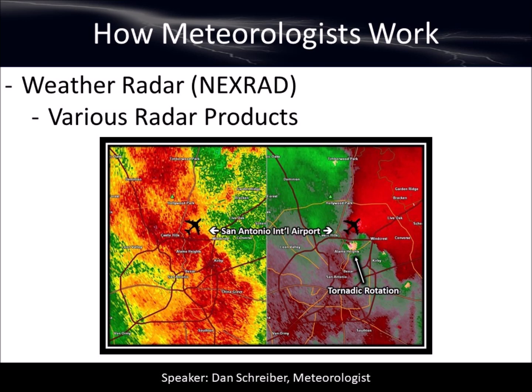We call it interrogating the storms — taking a deeper look into the storms. This is a picture of San Antonio Airport. Base reflectivity is on the left-hand side and base velocity is on the right-hand side. We're looking at a thunderstorm that caused a tornado — I think maybe an F1 or F2 — near the San Antonio Airport. There are all sorts of different features: we can see how tall the storms are, what sort of precipitation is falling — hail, rain, snow — dust storms, smoke. So that's where we use our weather radar.